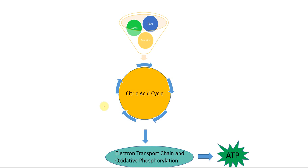When something is central, it generally means that it's in the middle — there's something before and something after. You can see here is our citric acid cycle, and a number of things feed into the cycle. Pretty much everything that we eat for energy — fats, carbs, proteins — all of these food sources can eventually enter the citric acid cycle.